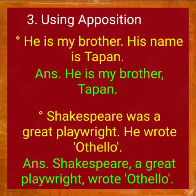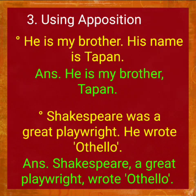Next example: 'Shakespeare was a great playwright. He wrote Othello.' The answer will be: 'Shakespeare, a great playwright, wrote Othello.' Here, another description of Shakespeare — 'a great playwright' — is placed side by side using commas. The main verb is 'wrote Othello.'